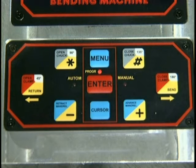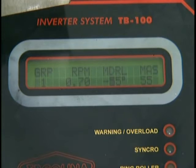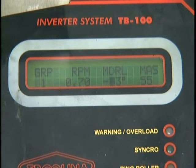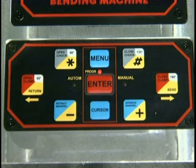Next, you'll have to set the mandrel retraction value. Depress and hold the cursor button until it flashes under the MDRL position. If you don't have a recommended setting from the factory, use the value of 3. This value will allow the mandrel to start retracting 3 degrees before the end of the bend. Depress the plus or minus key to set this value at minus 3 degrees for the initial bend, then depress the enter button when finished.